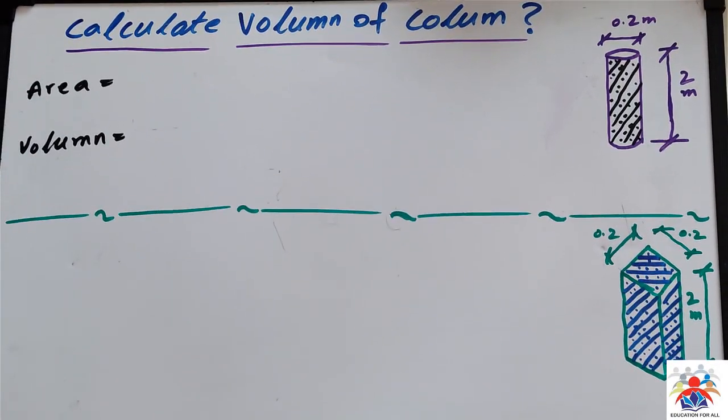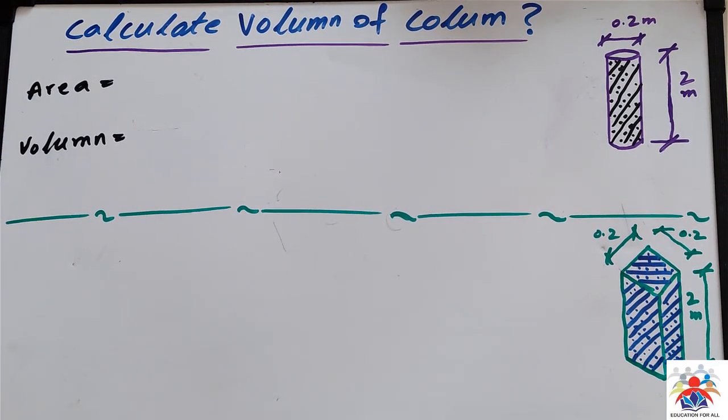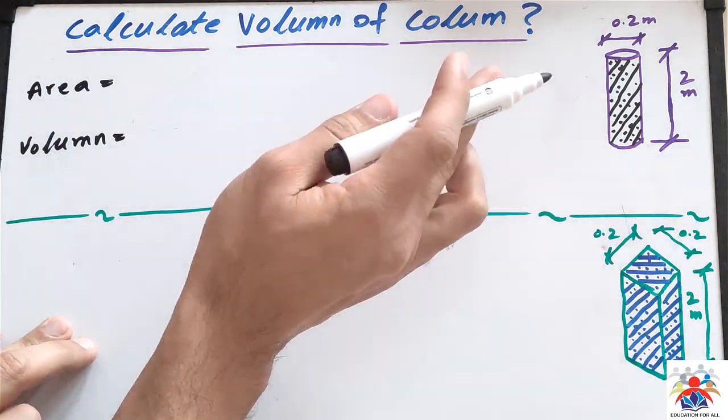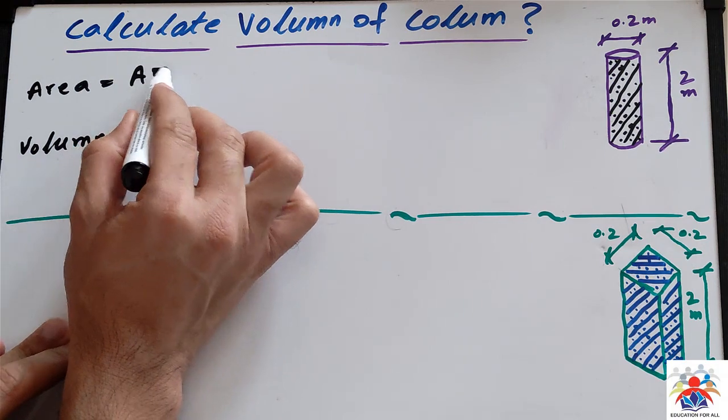We have two different columns: one is round and the other is square. So how do we calculate the volume of these columns? First of all, we will calculate the area. We have a diameter of 0.2 meters.